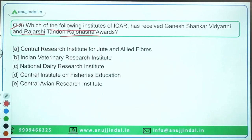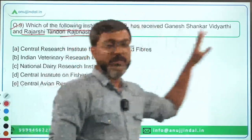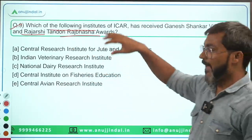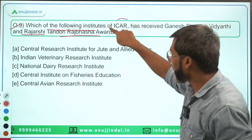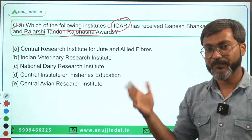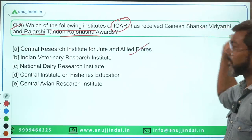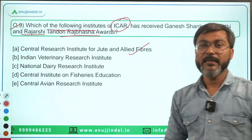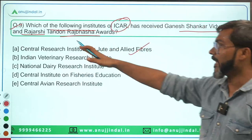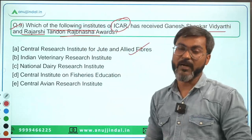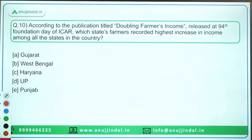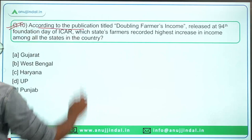Question number nine: which ICAR institute has received the Ganesh Shankar Vidyarthi and Rajrishi Tandon Rajbhasha Award? The details of these awards are not critical, but the institute is related to agriculture. It is the Central Research Institute for Jute and Allied Fibres which has won this award. Option A is the correct answer.